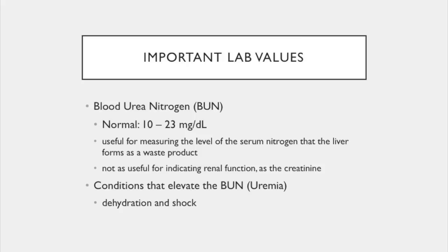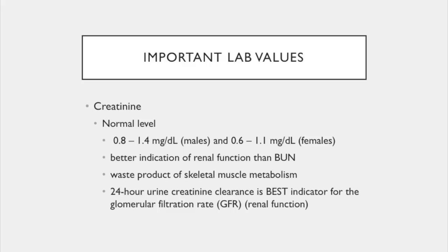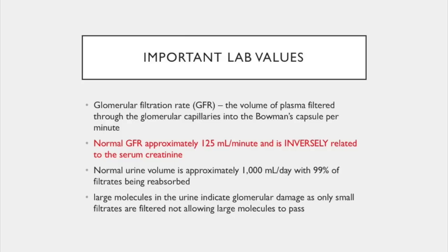Moving on to creatinine: creatinine is the waste product of skeletal muscle metabolism and is a better indication of renal function than the BUN. The normal level for males is 0.8 to 1.4 mg/dL, because males typically have more mass, and for females the normal level is 0.6 to 1.1 mg/dL. The best indicator for monitoring renal function — the glomerular filtration rate — is obtained from a 24-hour urine creatinine clearance, which must be kept on ice until it reaches the lab.